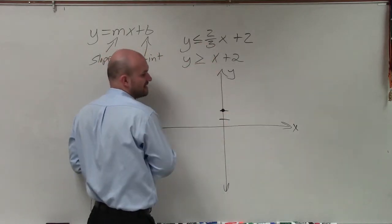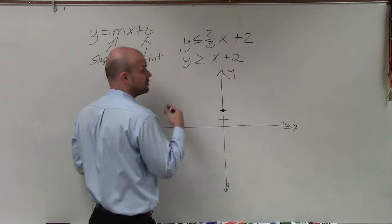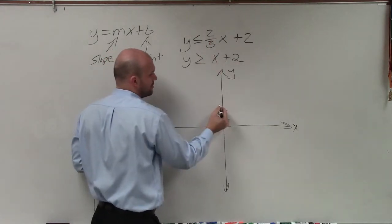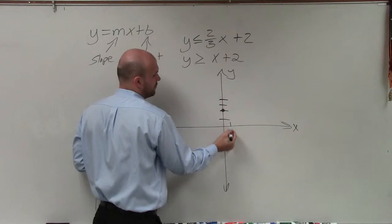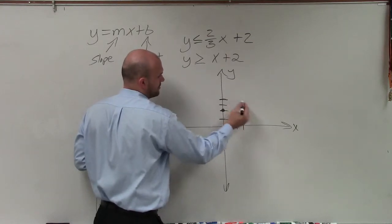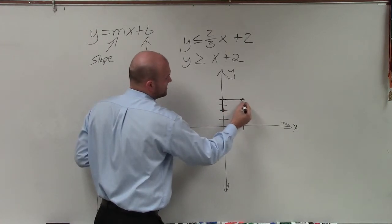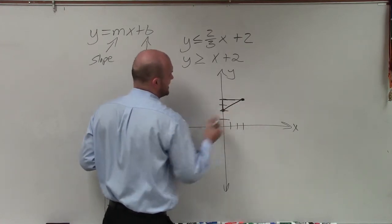Now I'm going to follow the slope to find the next point. So since my slope is 2/3, I'm going to go up 2 units and to the right 3 units, 1, 2, and then over 1, 2, 3. So I'm going to create my slope triangle here.